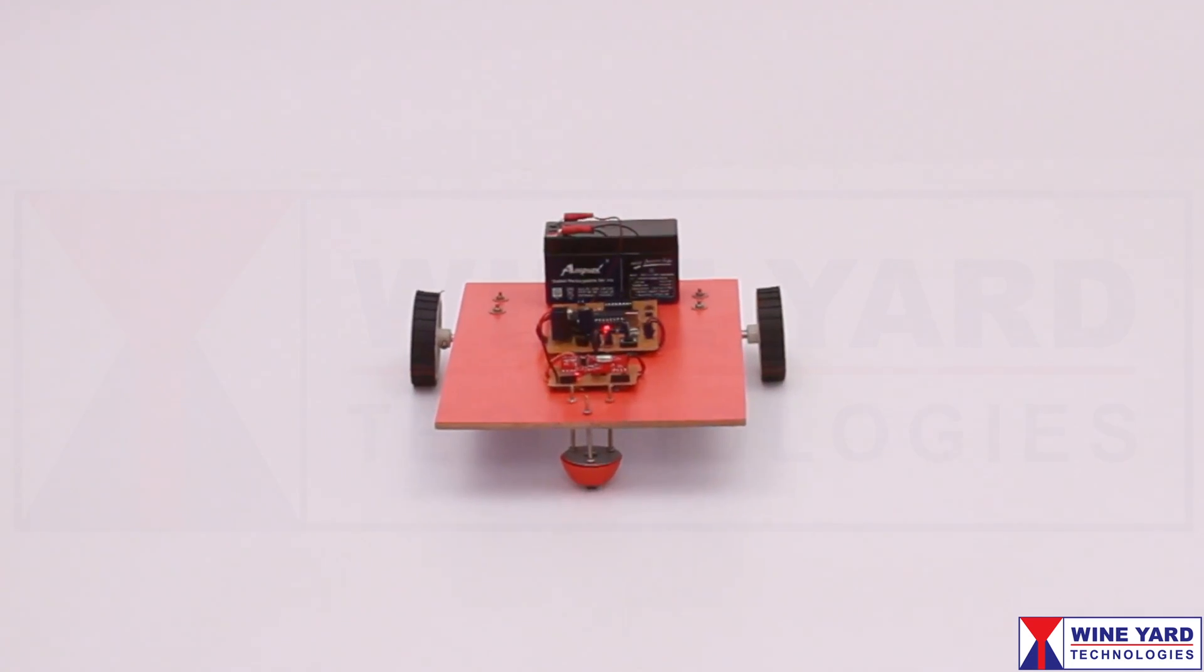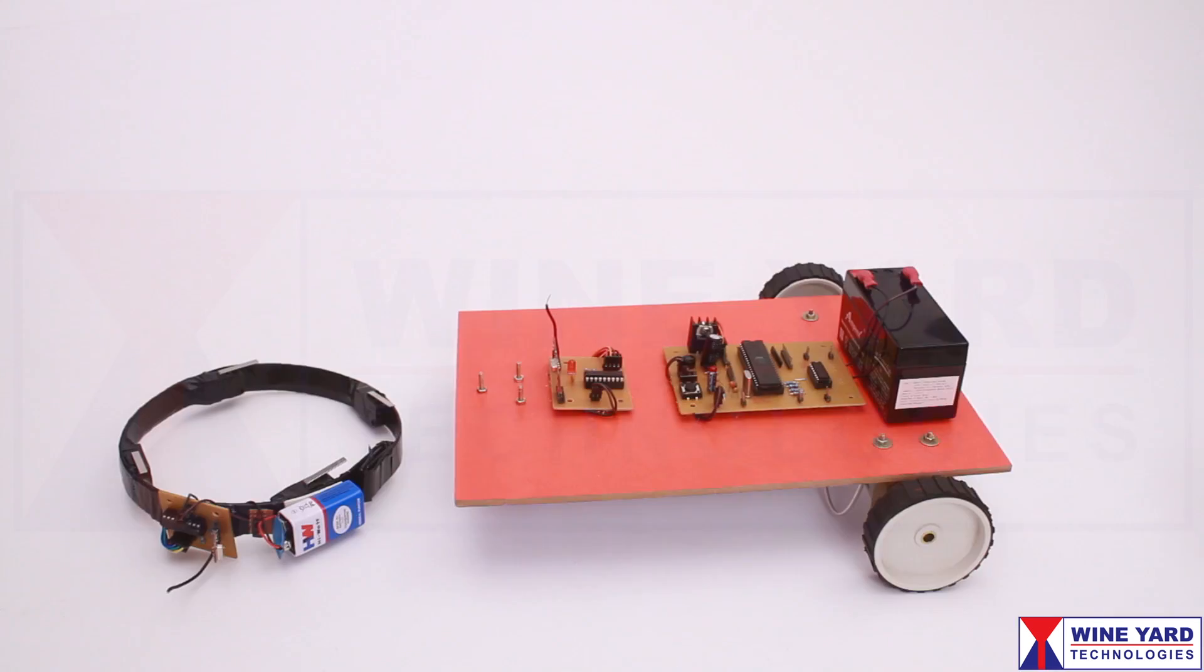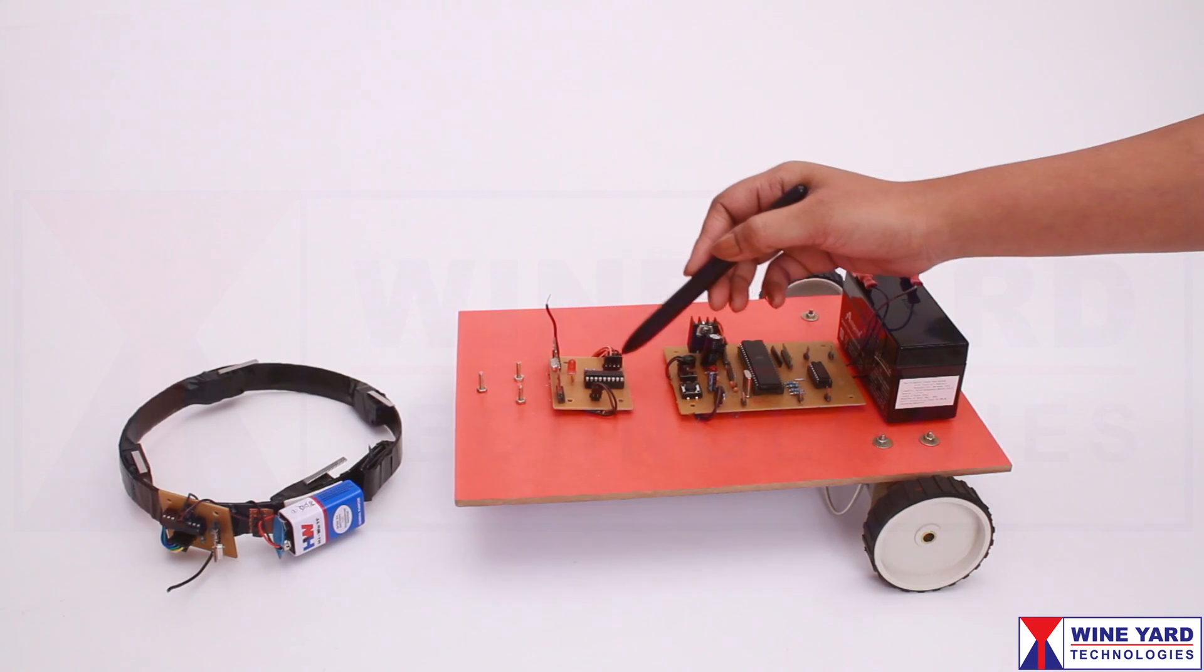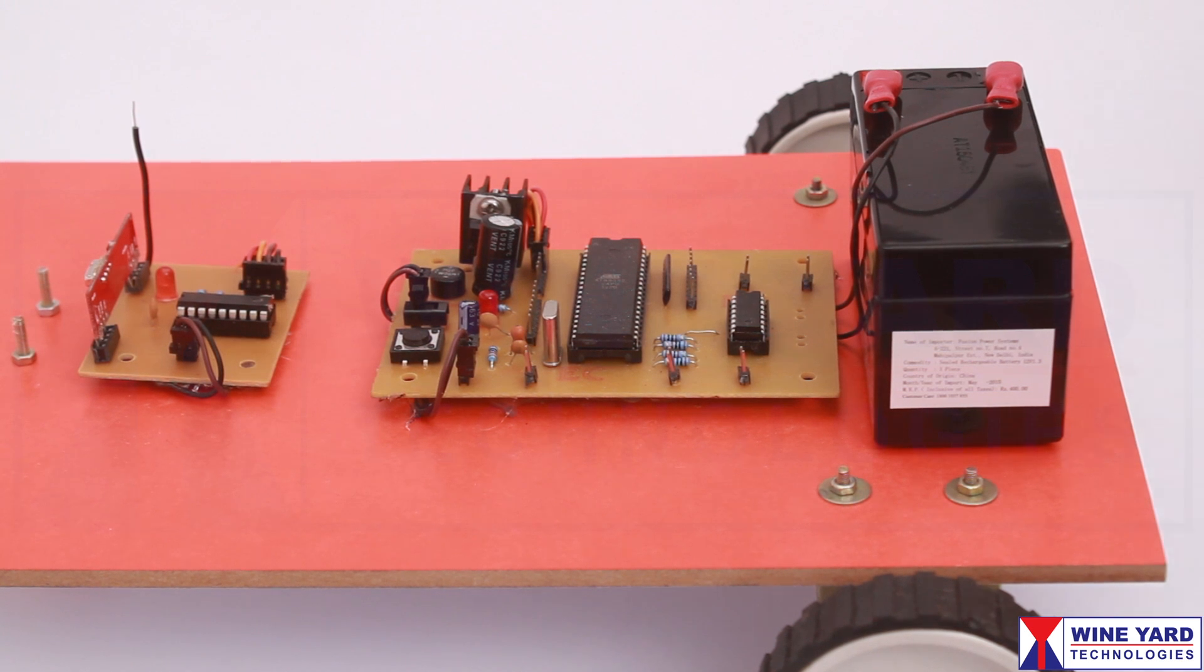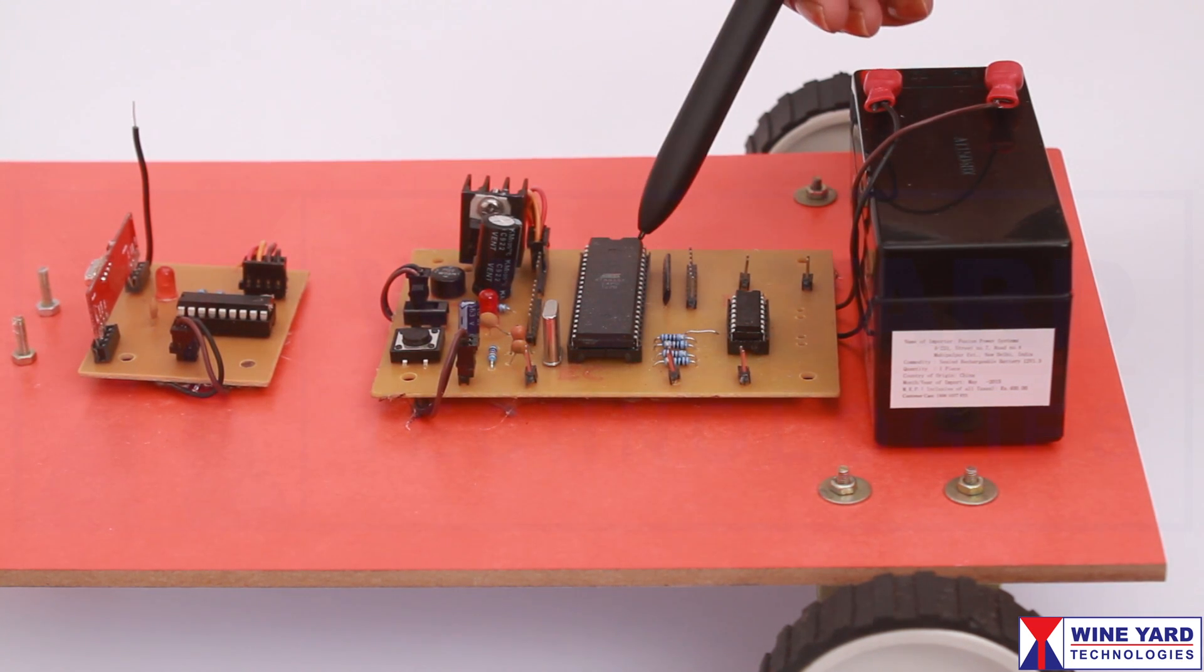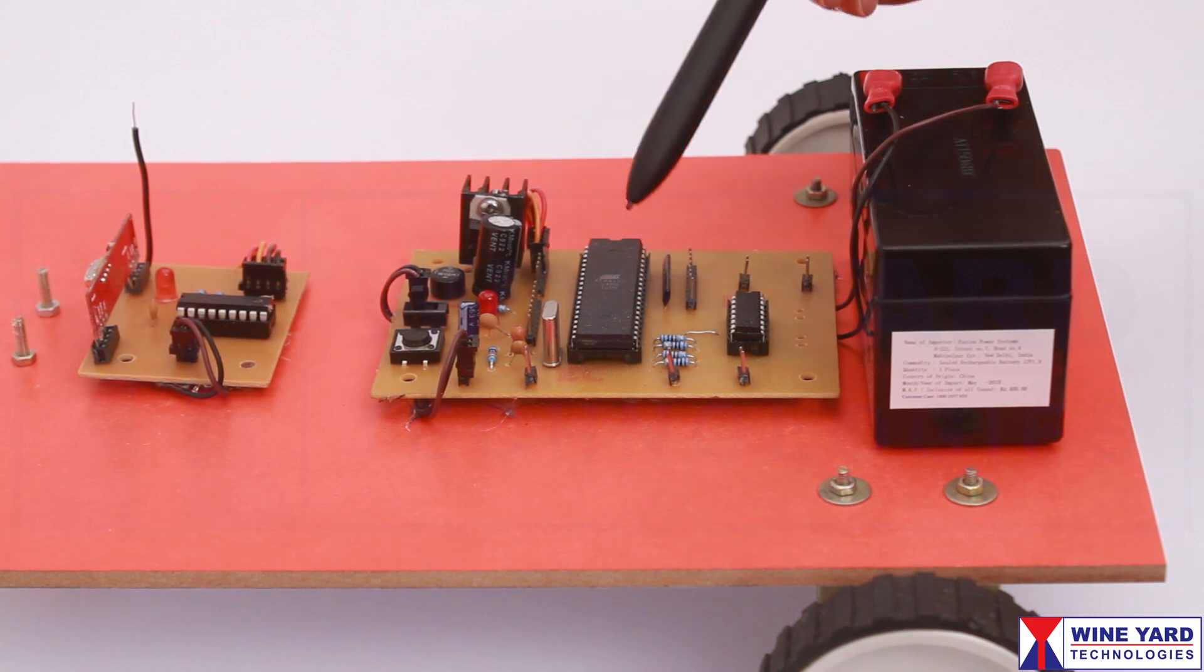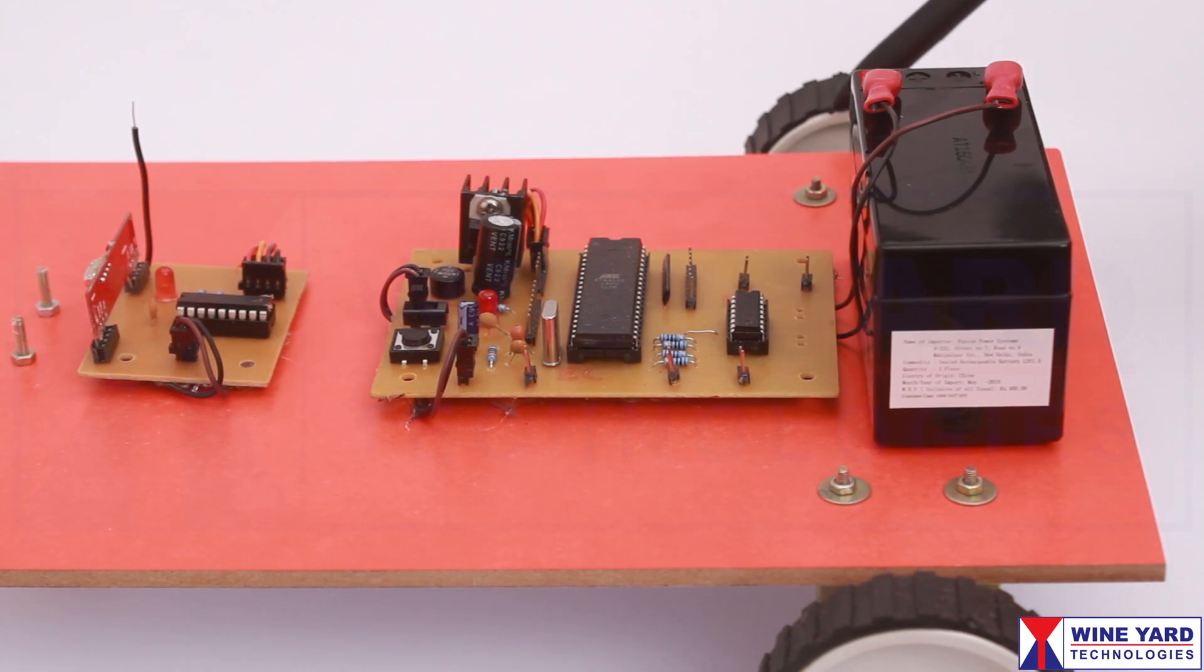This is the model car controlled by RF communication. This RF receiver accepts the commands generated by the neck band. The decoded RF data is given to this microcontroller. This microcontroller drives the geared DC motors through the H-bridge.